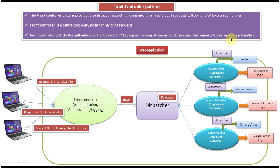I will explain the Front Controller using this diagram so that you will understand the explanation very easily. Here you can see a web application. This web application has three main components: the first one is the Front Controller, the second component is the Dispatcher, and the third component is the Handler, which is also called the Application Controller.